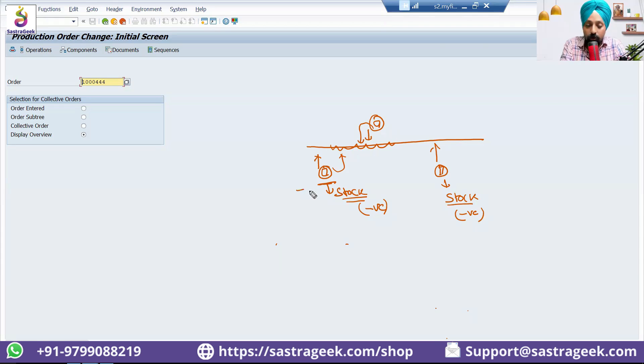That consumption is called the process which we call it as a goods issue. We have issued, we have issued the goods. We have removed from our inventory, and we have issued the goods. To whom we have issued? We have issued to a production order.